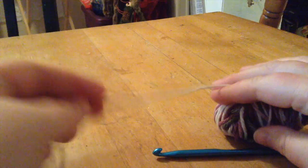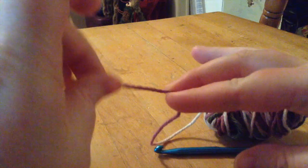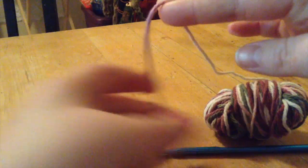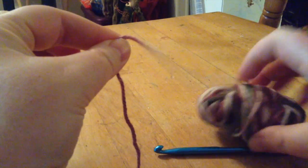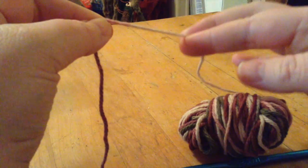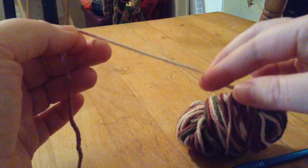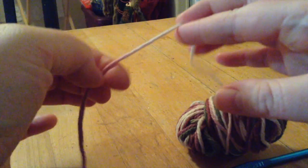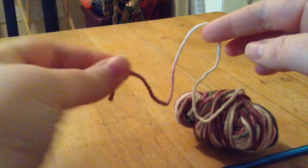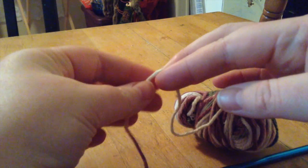When you see on a pattern CH, that means chain. We're doing our foundation chain. When you're working with yarn, this is the tail end. If I were to fold it over, this is a tail, this is your working yarn. So the yarn that you're going to be taking yarn from as you crochet or knit is always called the working yarn. I'm going to make myself a bit of a tail so that I can sew that in later, or weaving it in is another term for it. You'll see 'weave in end' on patterns.